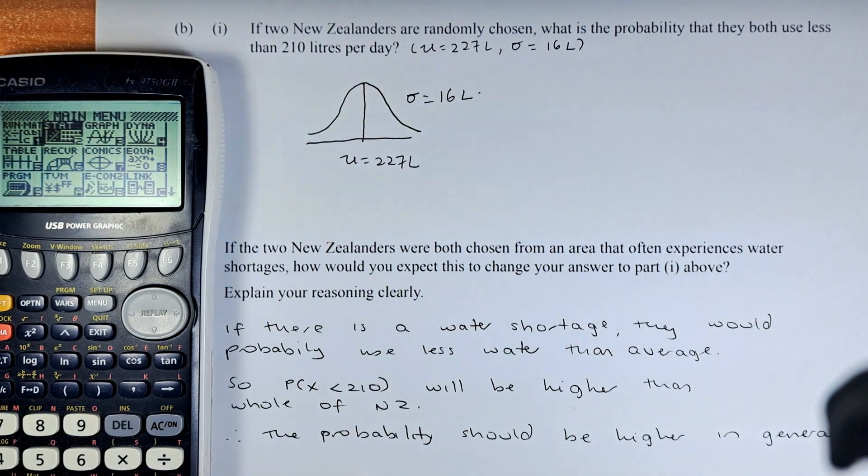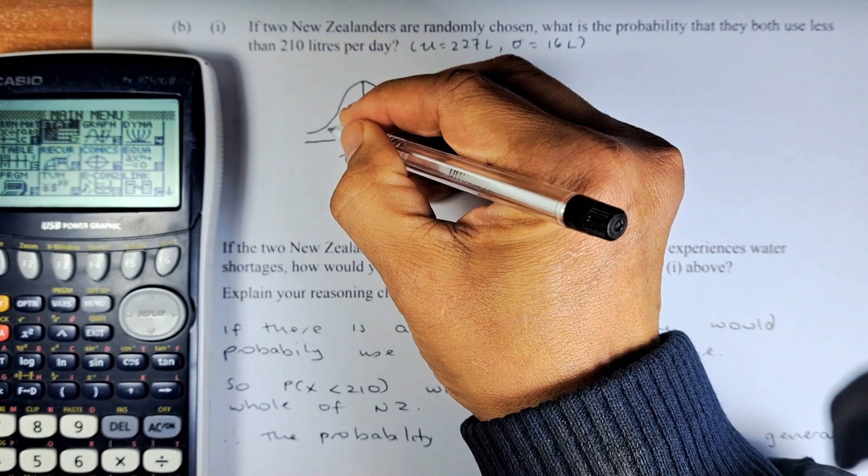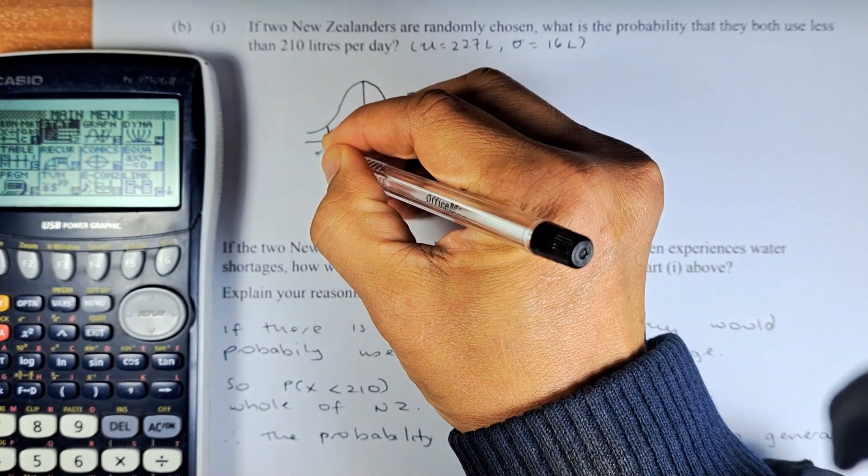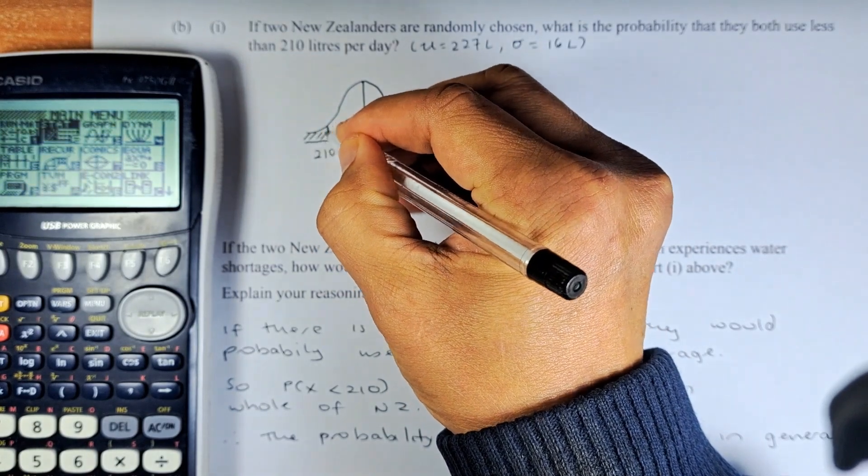And now they are going to find what is the probability that they use less than 210. So 210 is somewhere here. So 210 and less than 210, we are looking at this area here.